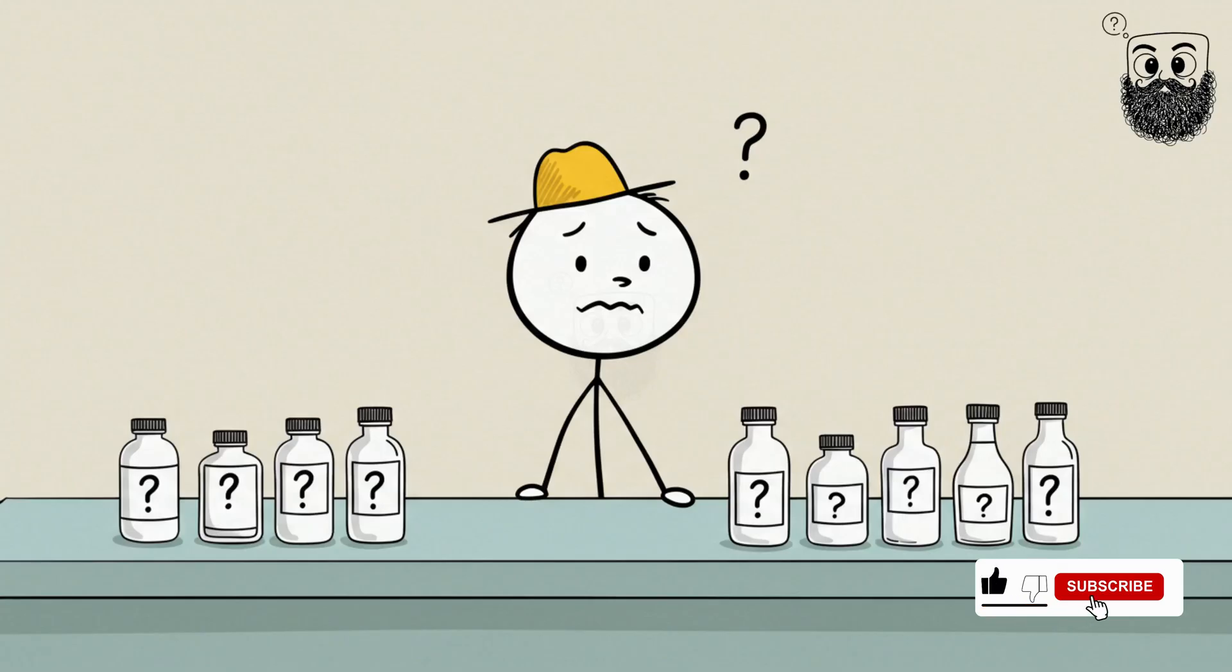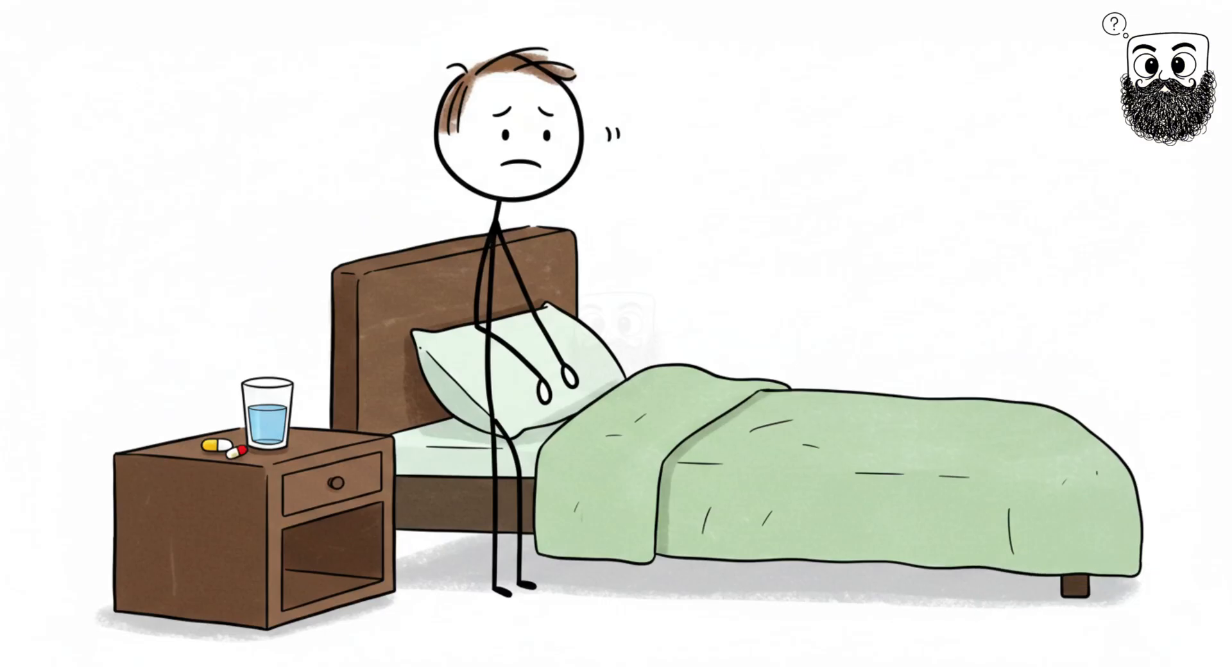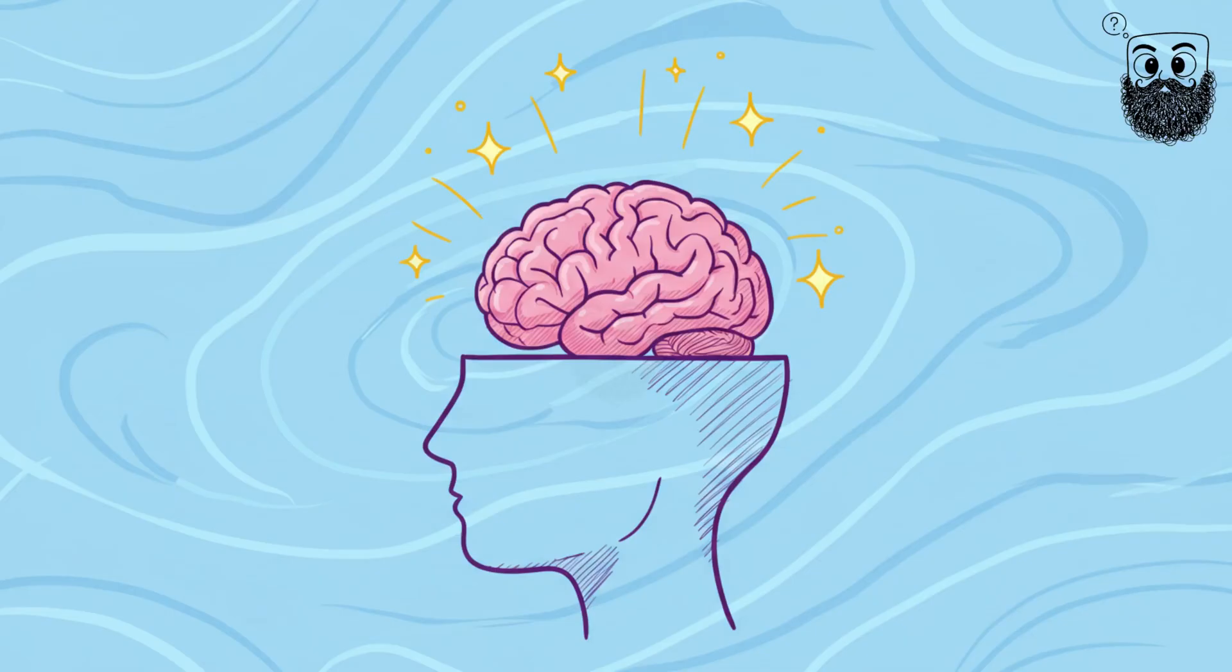Number 2. Placebo Power. Imagine taking a sugar pill for your headache, and the pain actually goes away. That's the placebo effect. Your brain doesn't know it's fake. It starts producing its own natural painkillers just because you believed the pill would work.